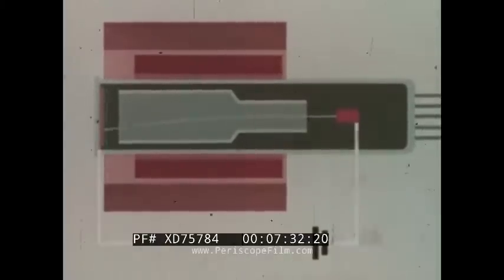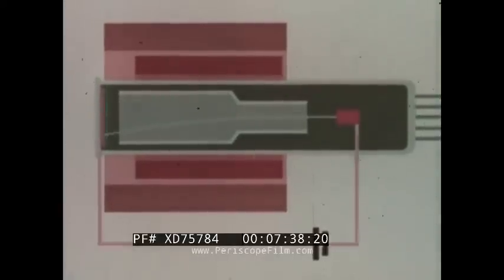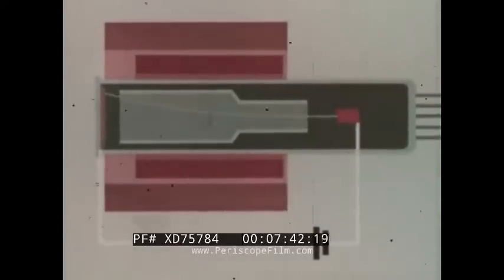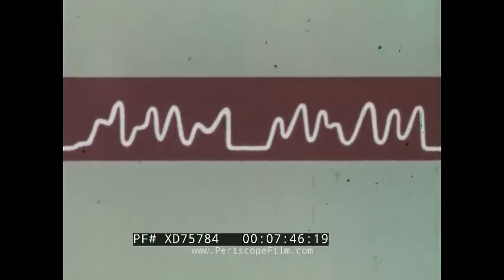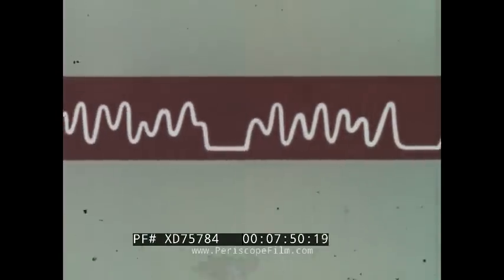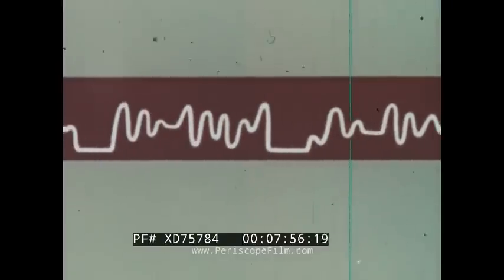The greater the recharging, the stronger the current; the smaller the recharging, the weaker the current. The variation of the current can be recorded in the form of a curve — the peaks correspond to light areas, and the valleys to dark areas of the picture. This flow of current is called a television signal.